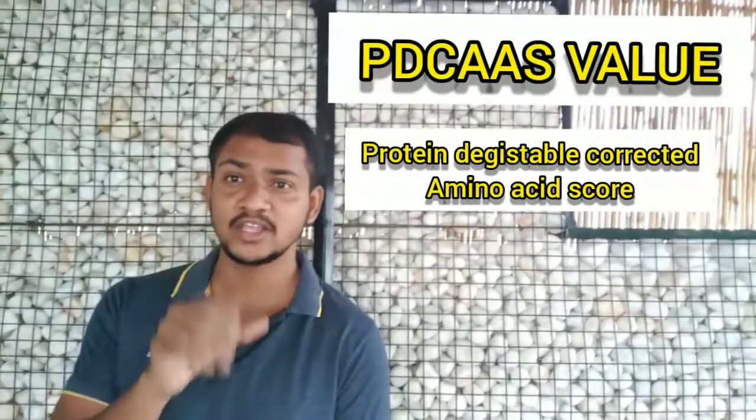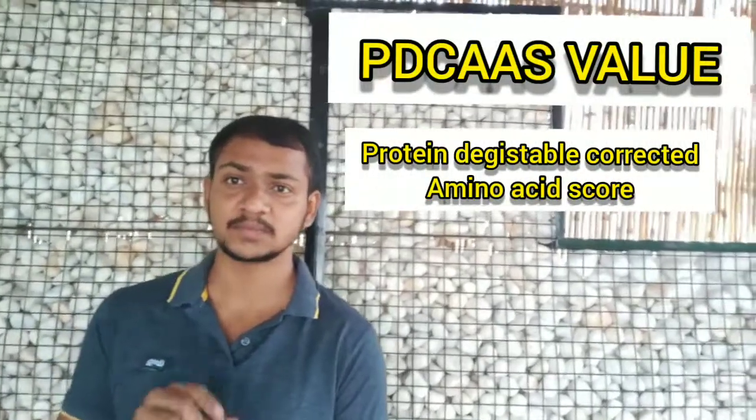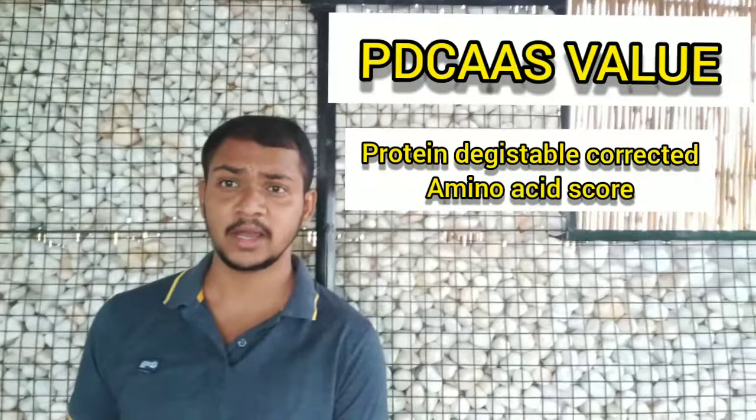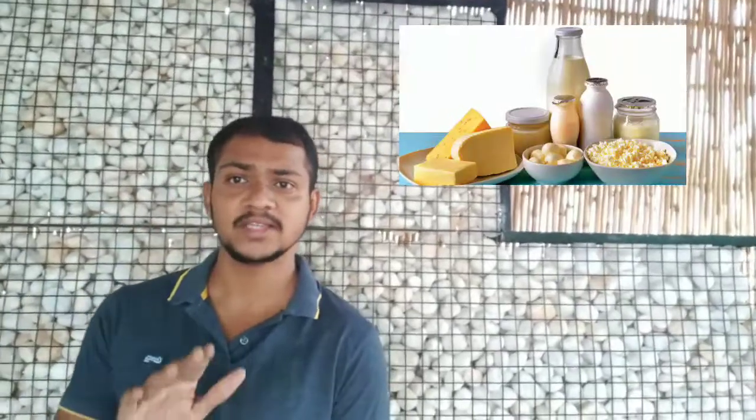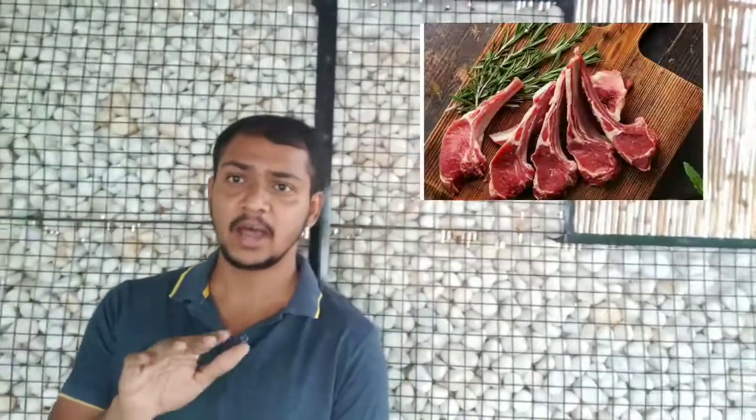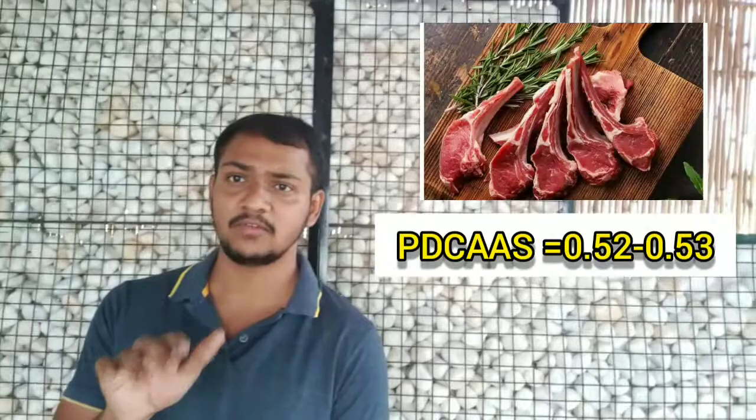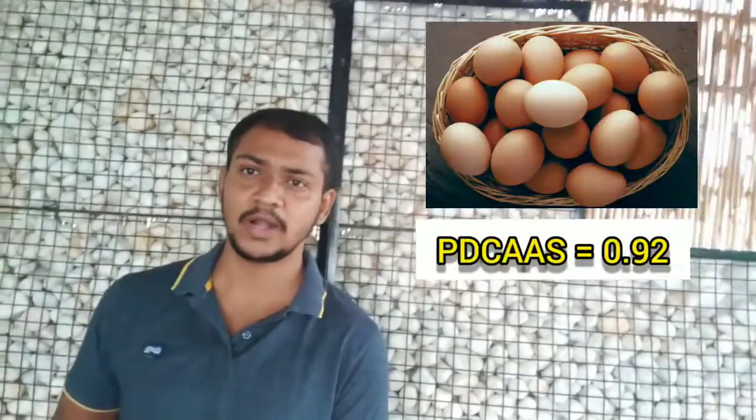The complete source of protein is measured by PDCAAS — protein digestible corrected amino acid score. A PDCAAS value of 1 and above means all 9 essential amino acids are present. Milk products score 1, meat products score around 0.51 to 0.53, and eggs score 0.92.